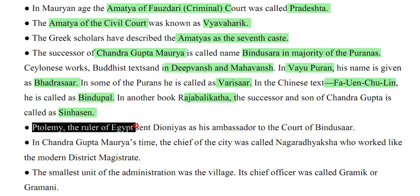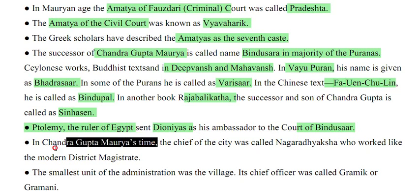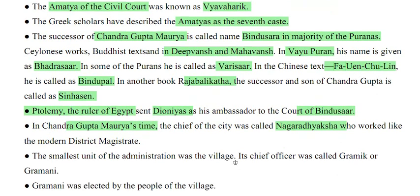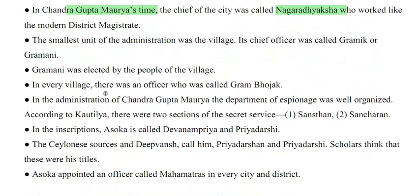Ptolemy, the ruler of Egypt, sent Dioneus as his ambassador to the court of Bindusar. In Chandragupta Maurya's time, the chief of the city was called Nagaradhach, who worked like the modern district magistrate. The smallest unit of administration was the village; its chief officer was called Gramic or Gramini, elected by the people. Every village also had an officer called Gram-Bhozak. The department of espionage was well organized, with two sections of secret service: Sansthan and Sancharana.